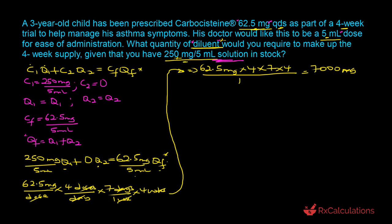This number is significant because wherever we see Cf × Qf, we can substitute that product with 7,000 milligrams. So our equation now becomes: (250 mg / 5 ml) × Q1 + 0 × Q2 = 7,000 milligrams.